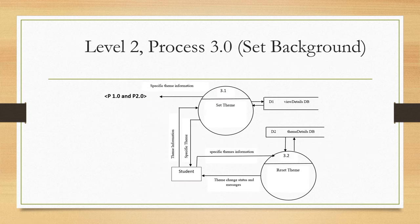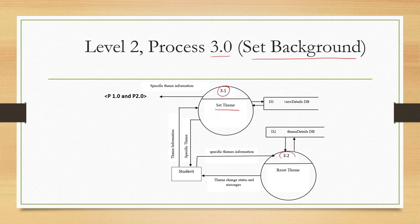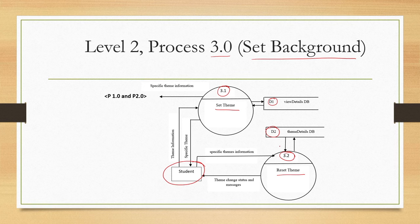Now let us check the level 2 diagram of process 3, that is Set Background. It has two sub-processes: 3.1 Set Theme and 3.2 Reset Theme. They make use of data stores D1 and D2. Like before, they also interact with the external entity as well as the data stores. Process 3.1 produces some output which goes to process 1 and process 2.